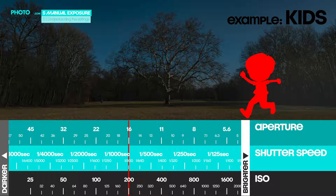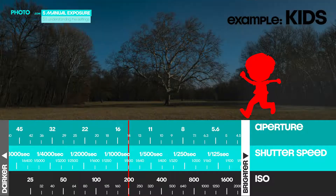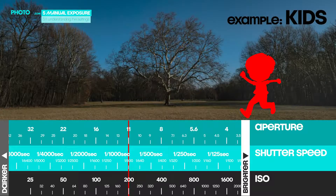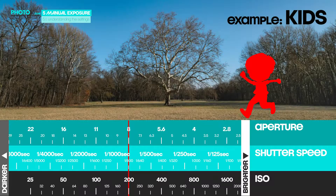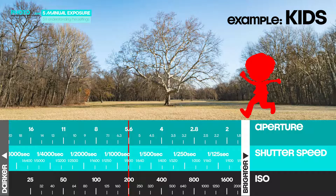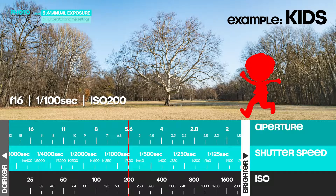Remember, we had 9 clicks and we started at f16. Three clicks to f11, three clicks to f8, three clicks to f5.6. We are now back at the same brightness as before, just with different settings – from f16, 1/100th, ISO 200, we went to f5.6, 1/800th, ISO 200.